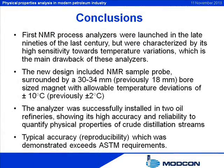The first NMR process analyzers were characterized by high sensitivity towards temperature variations, especially in cases where process streams of different temperatures and viscosities must be measured. To achieve maximum homogeneity and stability of the magnet, temperature fluctuations must be insulated to prevent influence on the magnet properties. Therefore, the primary task was eliminating high susceptibility to temperature deviations between process streams. The new design included a total innovation in hardware and software, with the analyzer containing a sample probe surrounded by a 30-to-34-millimeter (previously 18-millimeter) bore-sized magnet.